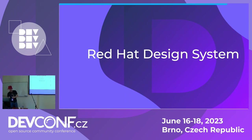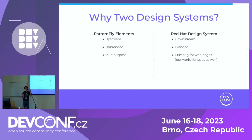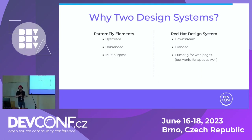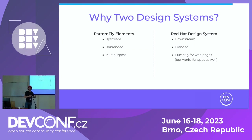Patternfly Elements is upstream — it's open to the community, addresses community concerns, it's unbranded so you can put it in any app, and it's multi-purpose, geared towards both web apps and pages with a particular emphasis on app development. The Red Hat design system is our downstream, which takes the core tools, concepts, and shared code from Patternfly Elements and implements specific use cases — in particular use cases related to the marketing department and pages like redhat.com, product trials, customer portal, and things like that. It's branded with all Red Hat brand standards built in, and primarily geared towards web pages, though you can use our components for web apps as well.